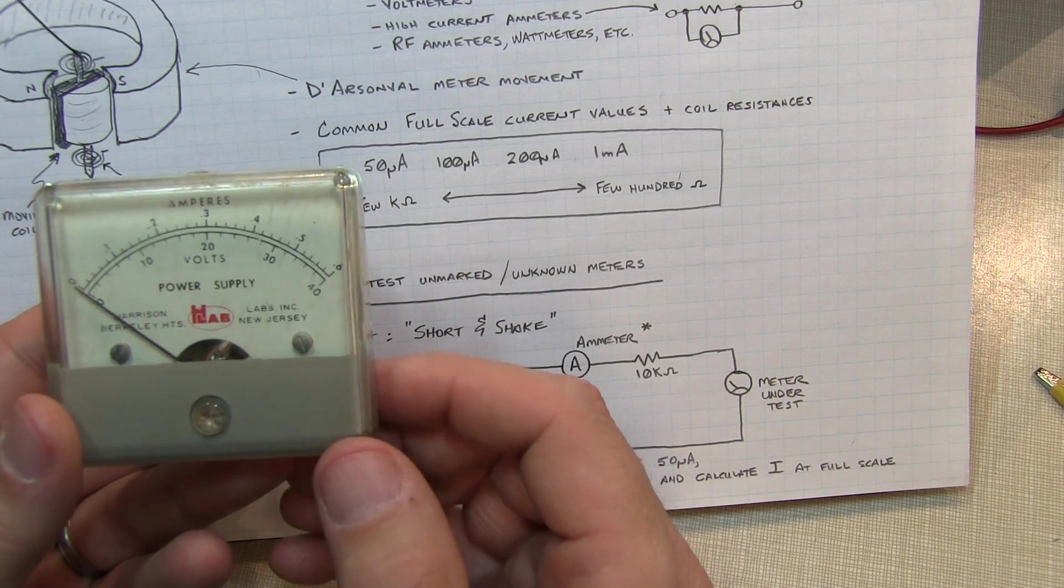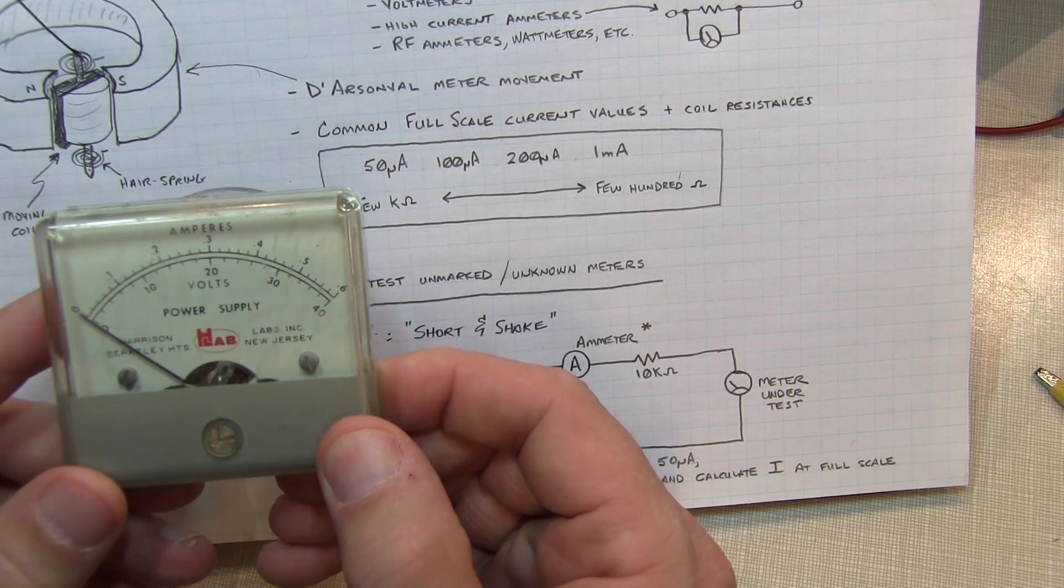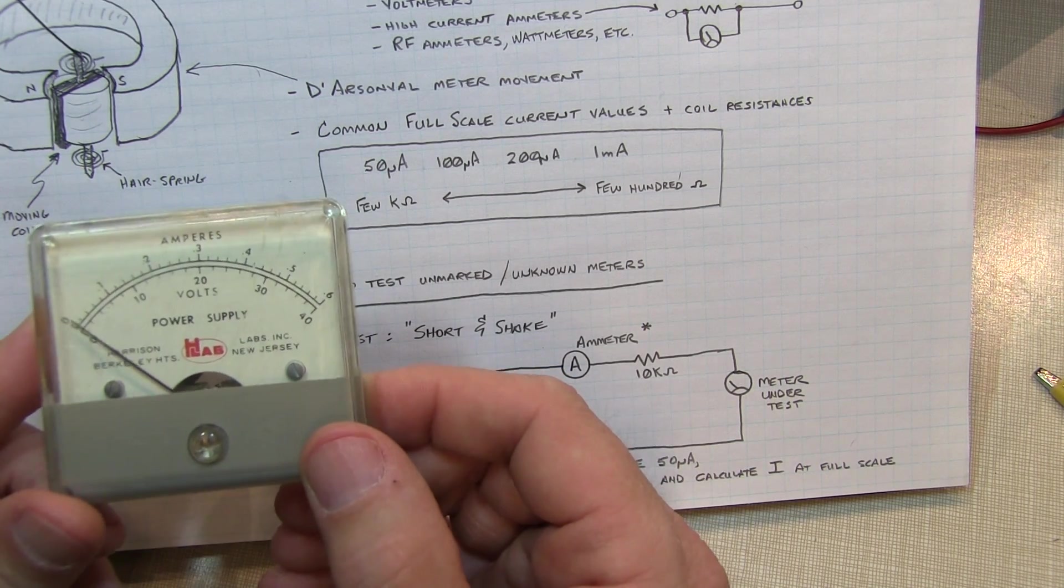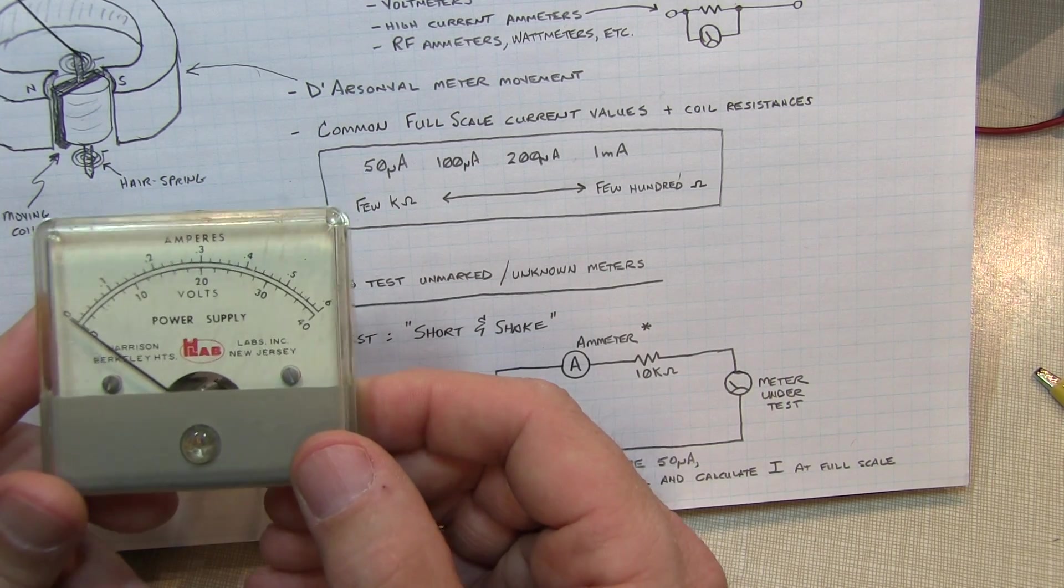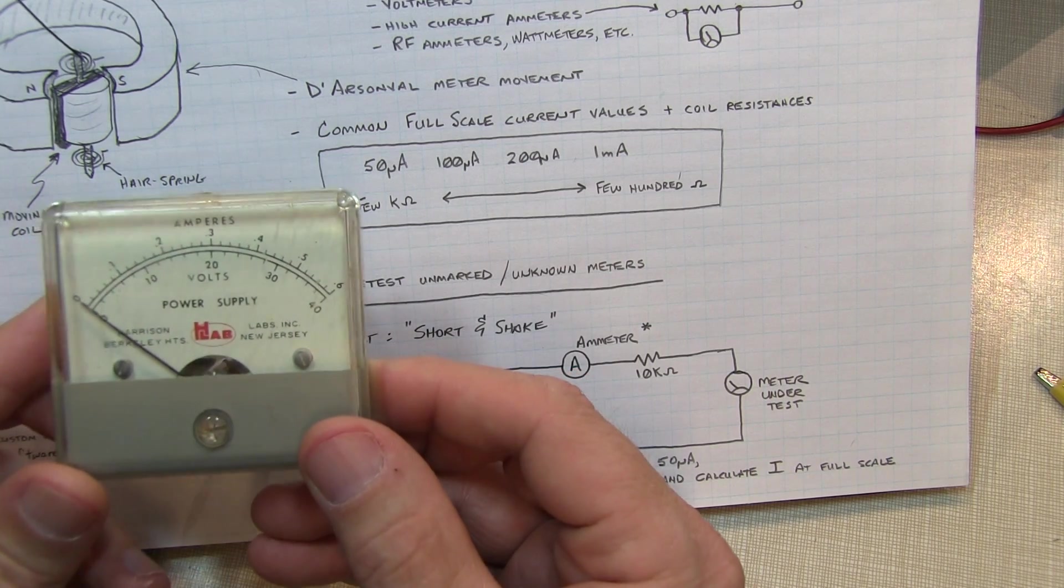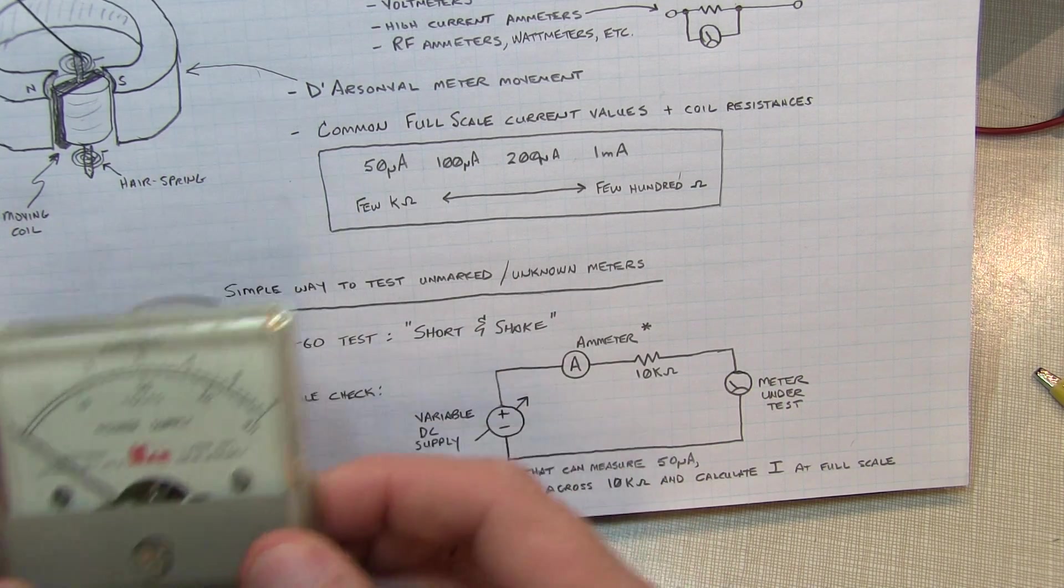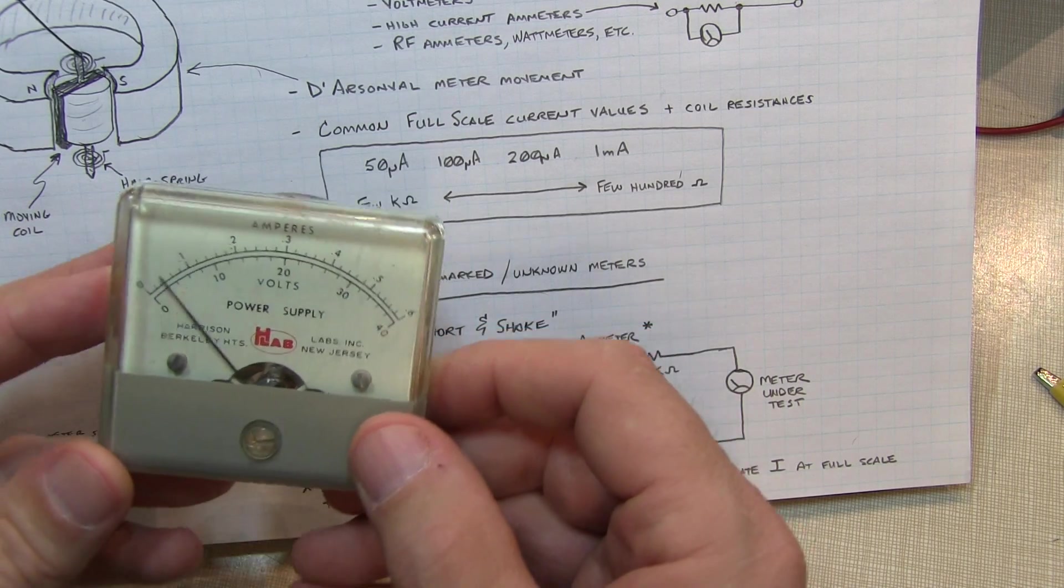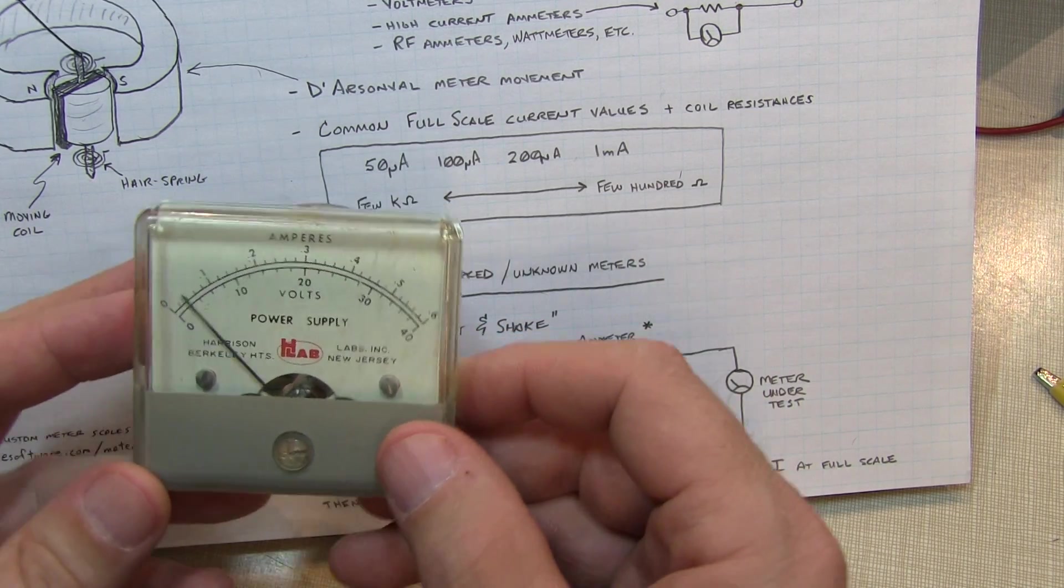So if you're shopping at a ham fest, a radio rally, or a surplus store, and you find a meter that you might like to use for a project, you know, first thing as we mentioned is make sure that the meter movement itself isn't frozen or stuck by rocking it back and forth. There's one other test you can do, kind of still in the store or the flea market to kind of see if the meter coil is working okay, is a test that I call, kind of a short and shake.